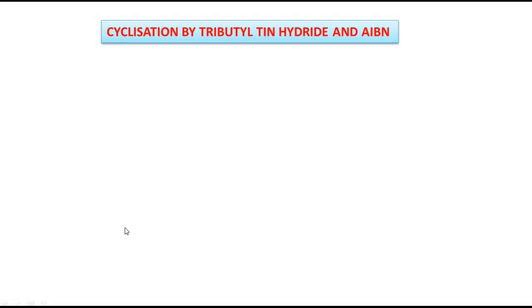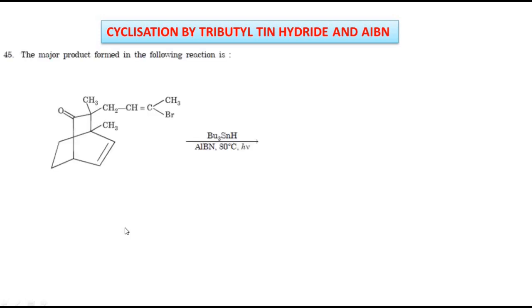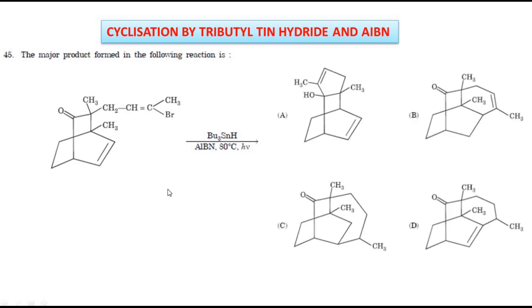Cyclization by tributyltinhydride and AIBN part 2. Let us take the question: major product formed in the following reaction is, this is Maharashtra set 2020 question. Now, here the cyclization occurs. How the cyclization occurs? The 4 options are given and which will be the product?